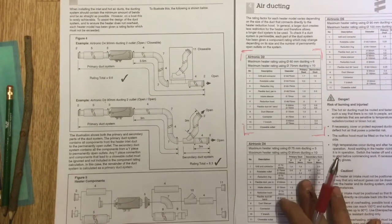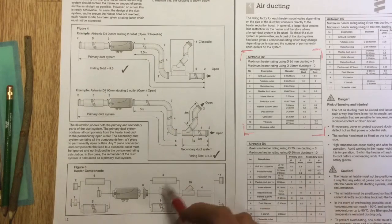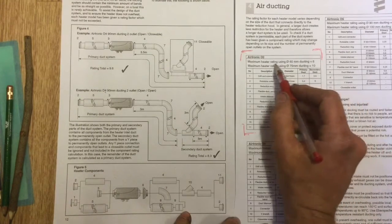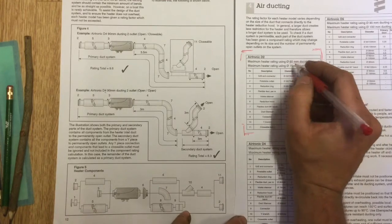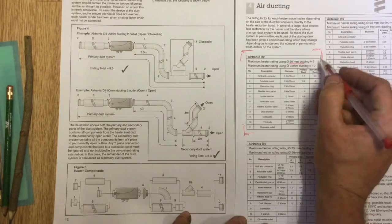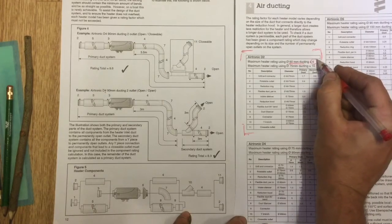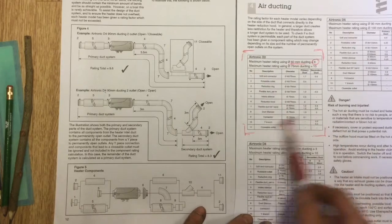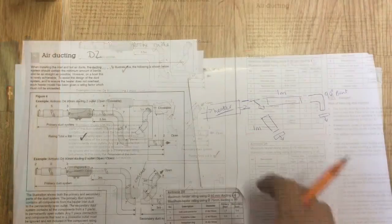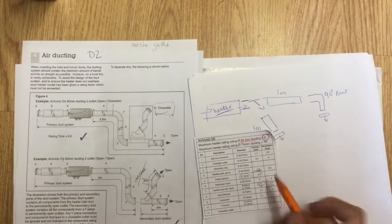We need to consider how big our ducting is first. If we have 60mm ducting, which I think is fairly standard - this is the size I tend to use - I can have a maximum value of six. That's not six meters, that's just using this information below, a value of six. Let's take a minute to look at an example.